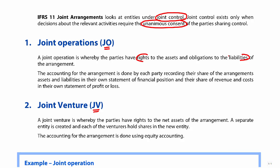The two airline companies exist totally separately. The question is: how do we separate the revenues, the costs, the assets, and the liabilities? All you do is record your share of the arrangement's assets and liabilities in your statement of financial position, and your share of the revenue and costs in the statement of profit or loss. So if you own 50% of the joint operation, you will take 50% of the revenues, 50% of the costs, and 50% of any shared assets and liabilities.